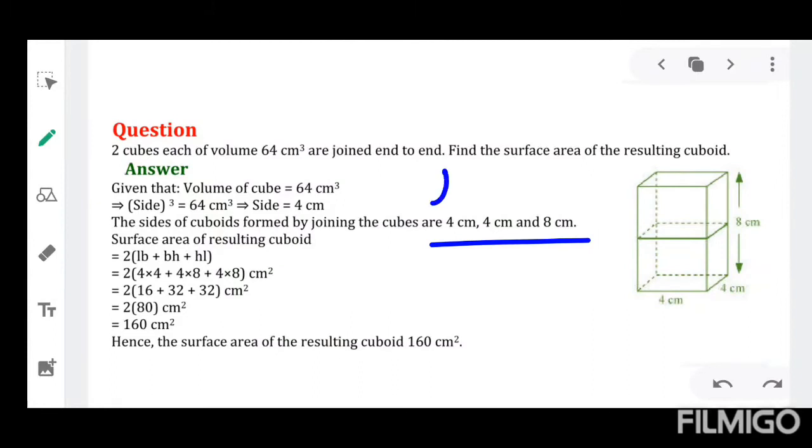Let us substitute the L, B, and H value of the newly formed cuboid in the formula of surface area, that is 2 times (LB + BH + HL). After substituting, we will get 160 cm².